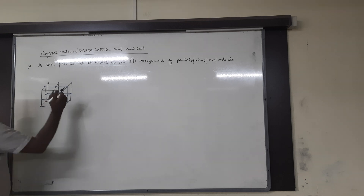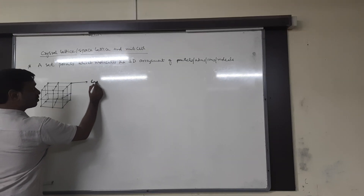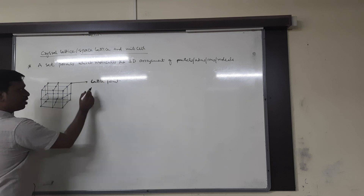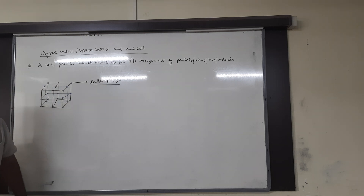In crystal lattice or space lattice, each point is called a lattice point or lattice site. This lattice point may be an atom, an ion, or a molecule. It may be an ion in case of ionic solid, a molecule in case of molecular solid, an atom in case of covalent solid, or a metal atom in case of metallic solid.